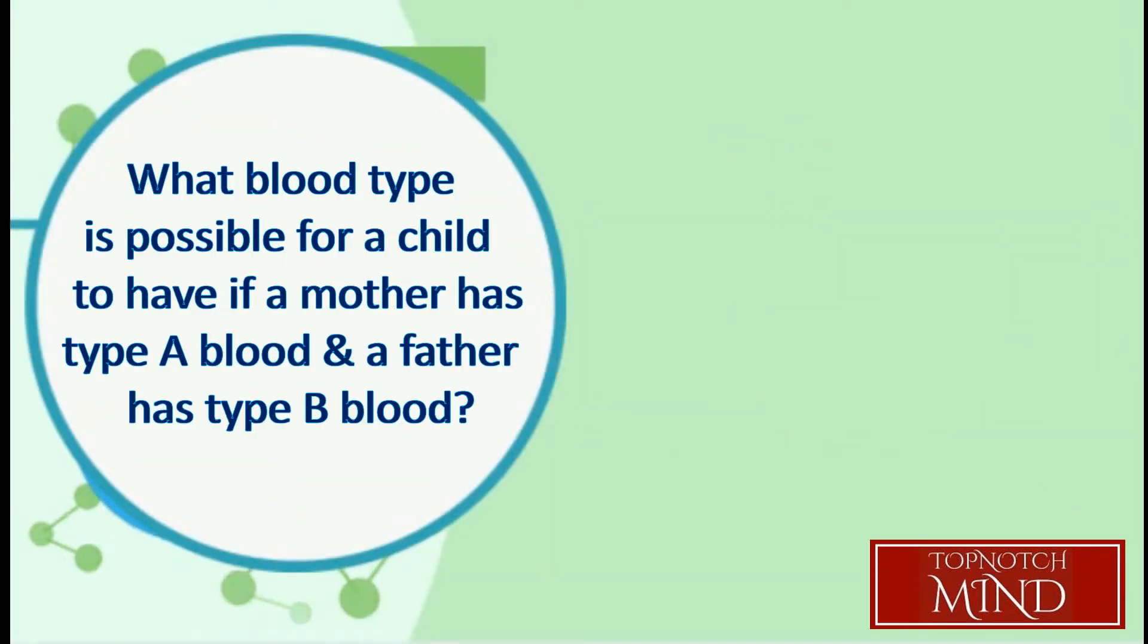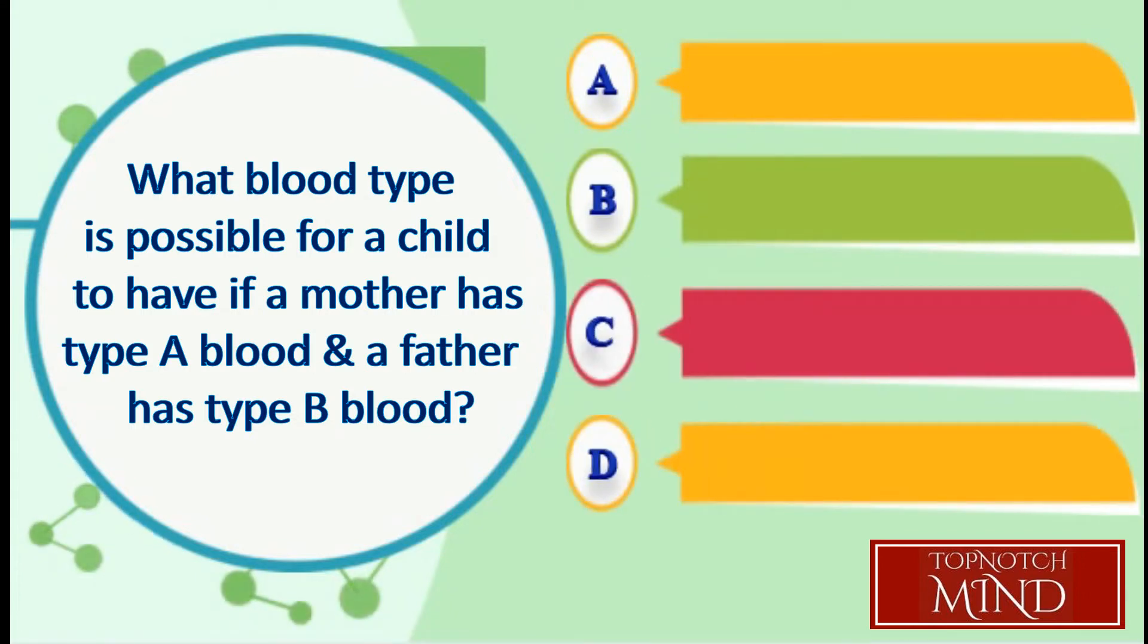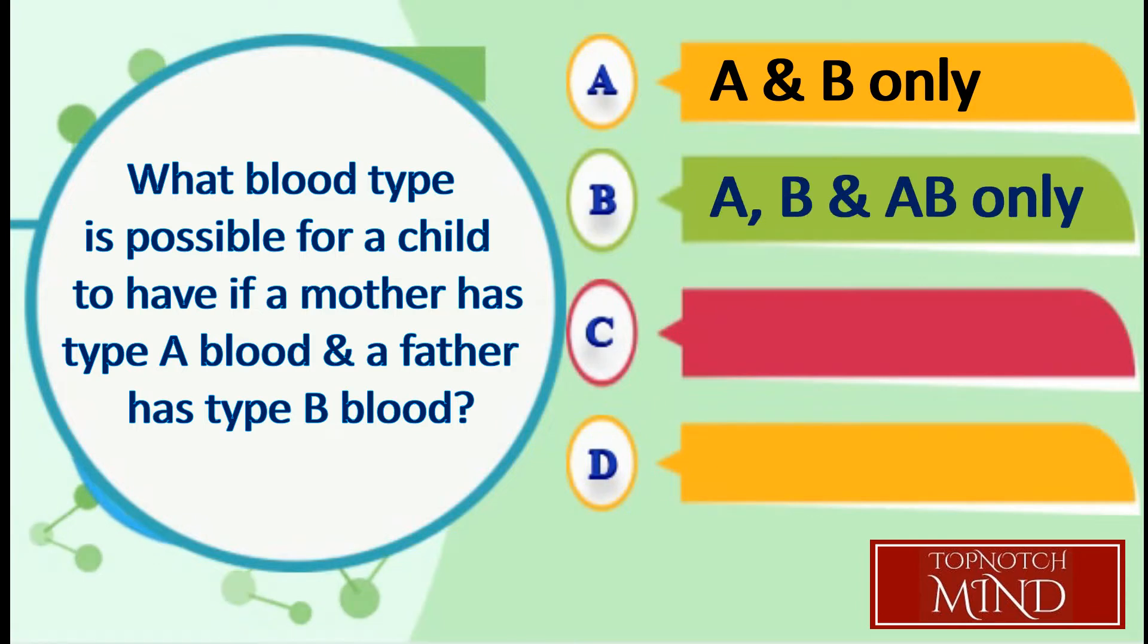What blood type is possible for a child to have if a mother has type A blood and a father has type B blood? A. Type A and B only, B. Type AB and AB only, C. Type A, B, AB, and O, D. Type A, B, and O only.